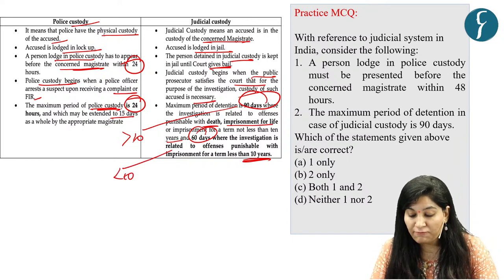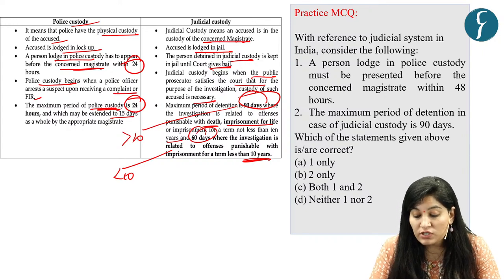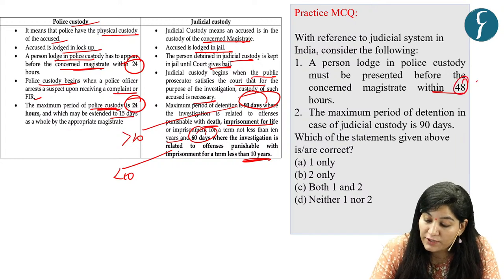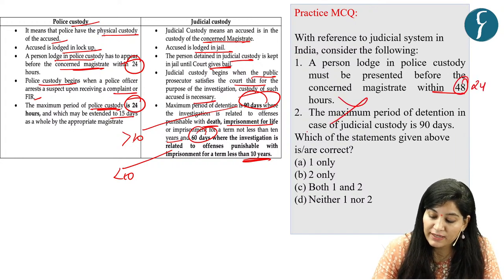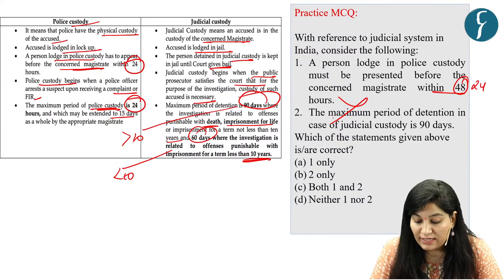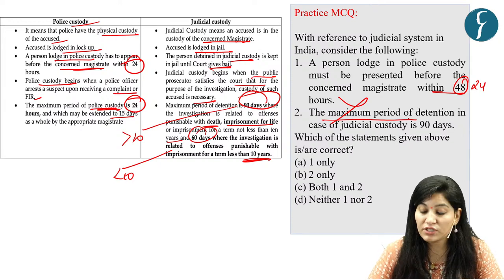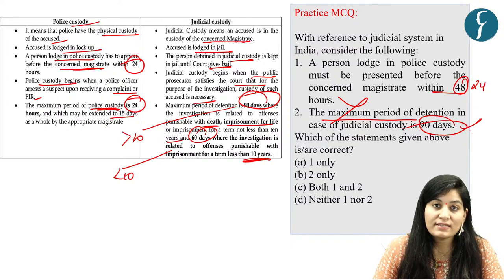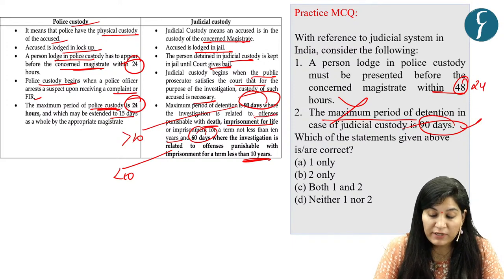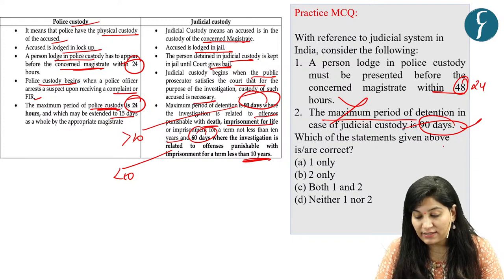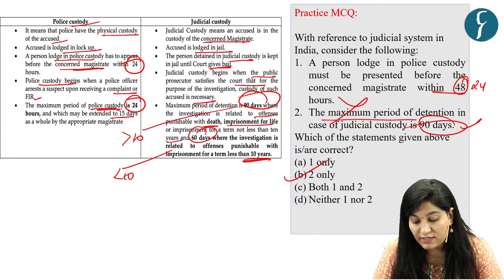Let's solve our practice question. Statement 1: A person lodged in police custody must be presented before the concerned magistrate within 48 hours. This is incorrect — it is within 24 hours. Statement 2: The maximum period of detention in judicial custody is 90 days. This is correct for cases where the offense is punishable with more than 10 years. So our answer is option B — 2 only.